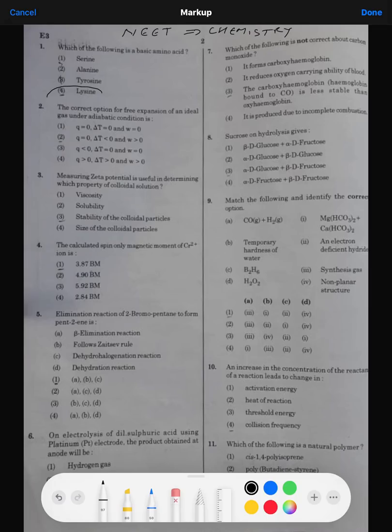Question number one: which of the following is a basic amino acid? The answer is lysine, which is a basic amino acid. Tyrosine has benzene OH, acidic. Alanine is a neutral amino acid. Next is the correct option for free expansion of ideal gas under adiabatic condition. In this case everything will be zero.